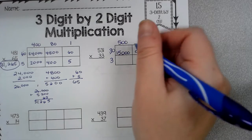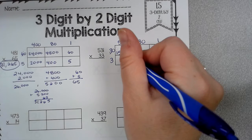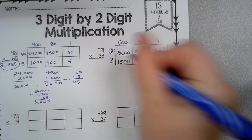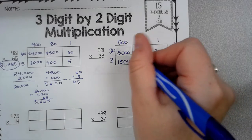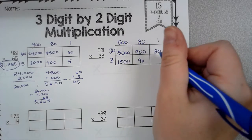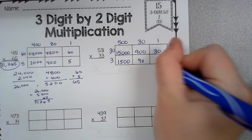3 times 500 is 15. They got 1500. So 0, 0, 5, 1. 3 times 3 is 9 and 1 zero. And then 3 times 1 is 3.